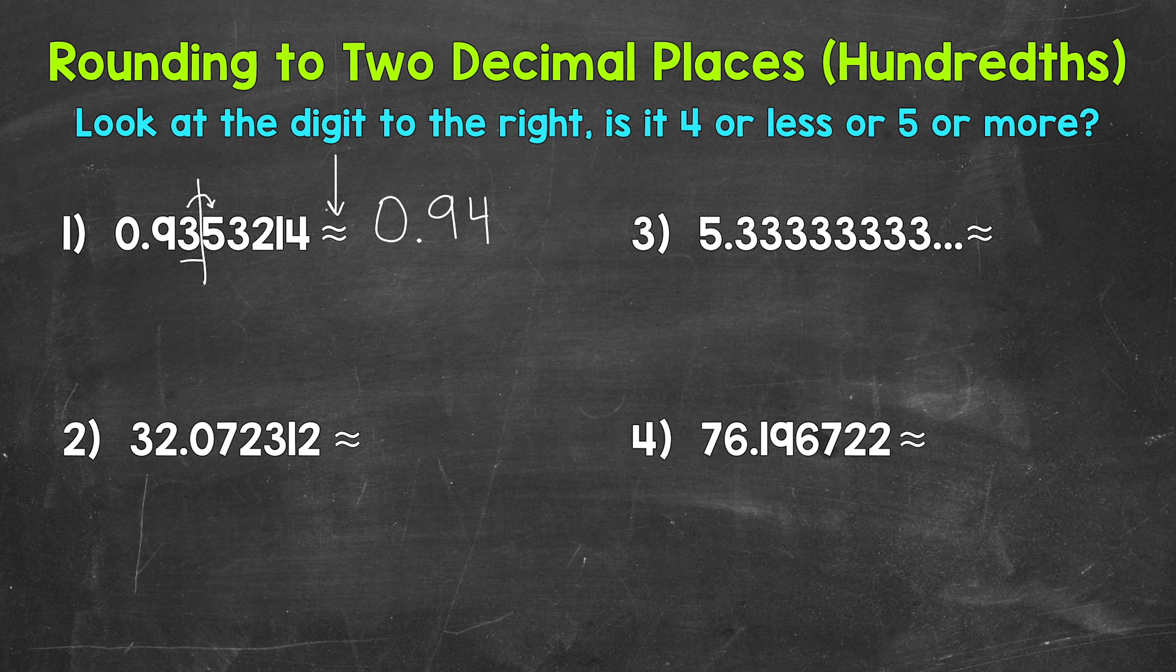Let's move on to number two where we have thirty-two and then some decimal digits. There's a seven in the hundredths with a two to the right in the thousandths. Two is four or less, so we stay the same. This decimal rounds to thirty-two and seven hundredths.